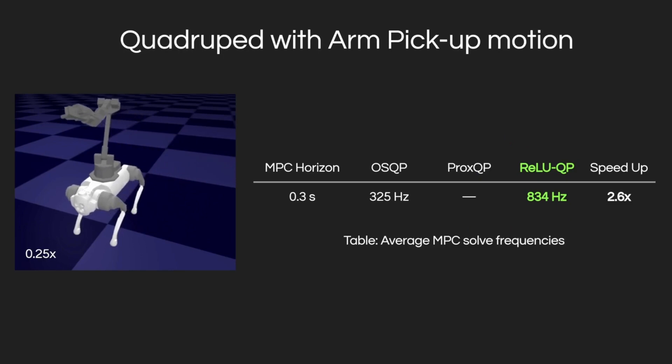Finally, we controlled a quadruped with an arm performing a pickup motion, a system that has 52 states, 20 controls, 12 contact forces, and friction and torque constraints. We achieved a 2.6 times speed improvement over OSQP, and ProxQP was unable to stabilize the system.